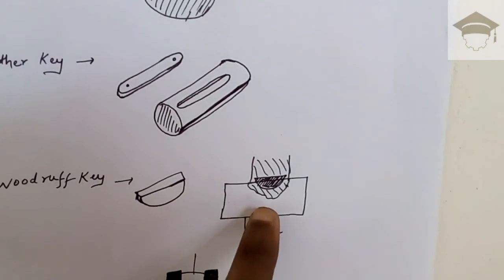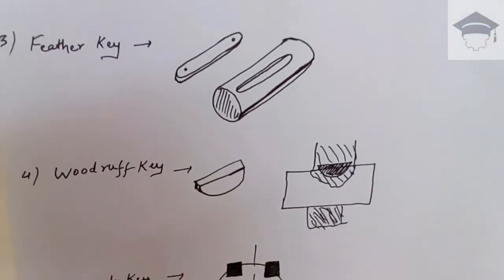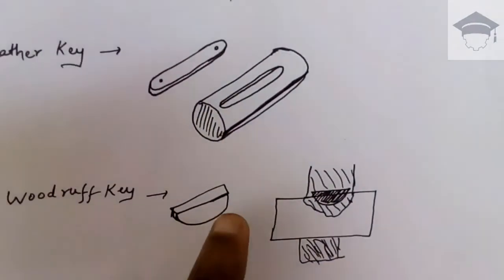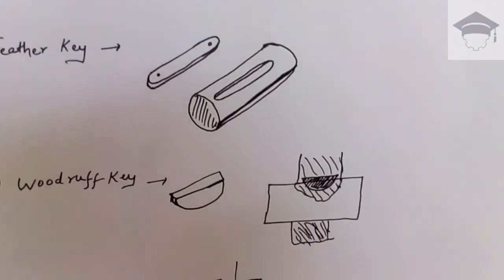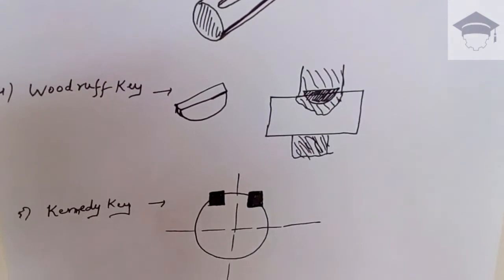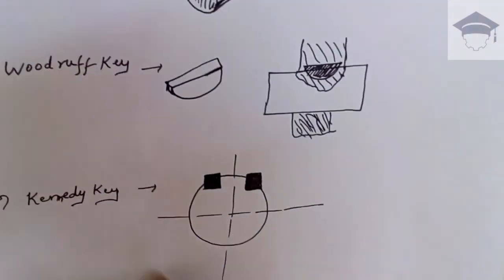Last comes the Kennedy key. It is similar to the sunk key, but here two sunk keys are used in combination, so it is known as Kennedy key. The function is similar to sunk key.